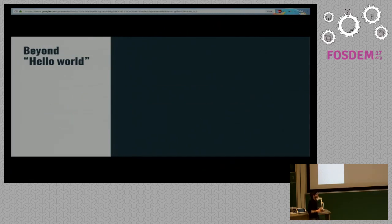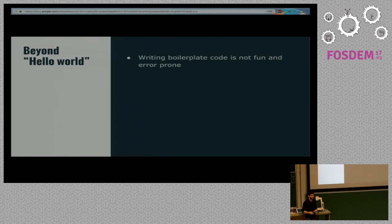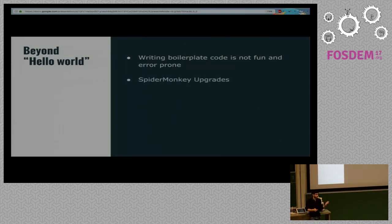When you have thousands of bindings inside your project, you'll quickly get bored writing boilerplate code and doing conversions. It's very error-prone — you can easily make mistakes and your code will not work as expected, or it will crash. You can also see there's quite a lot of code for not that much functionality.